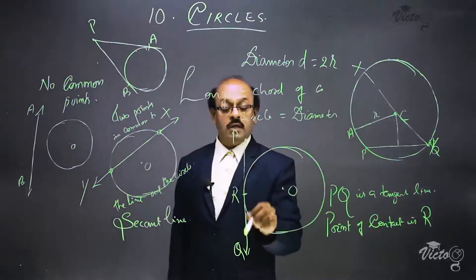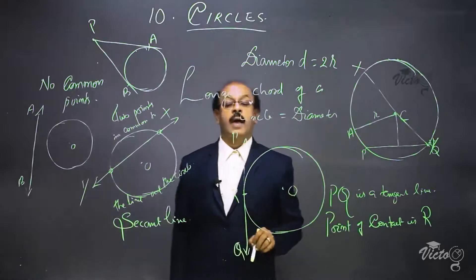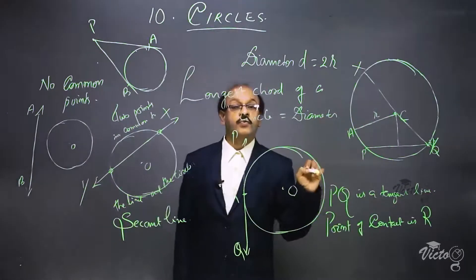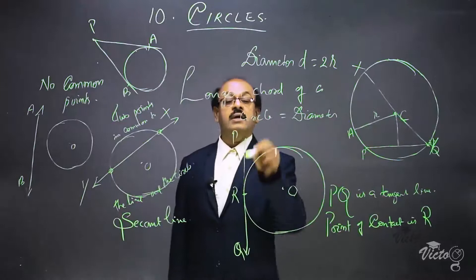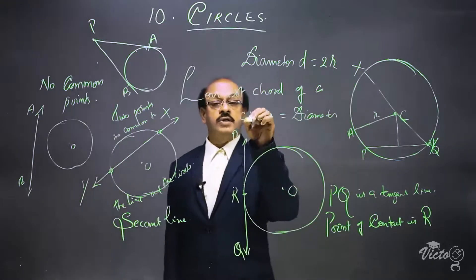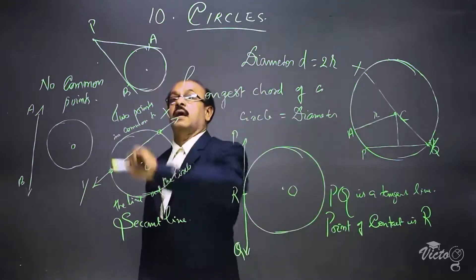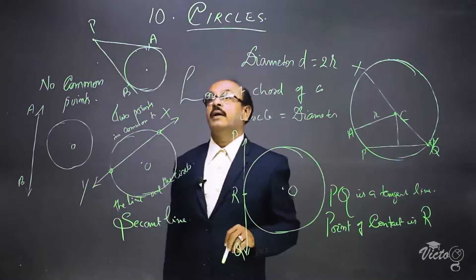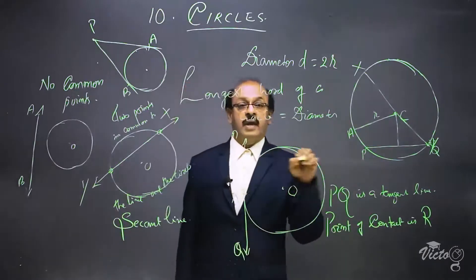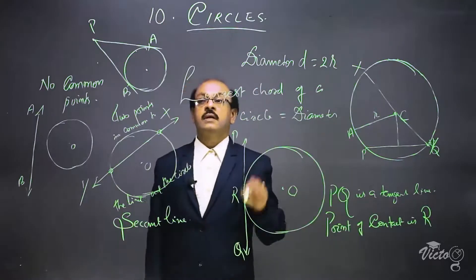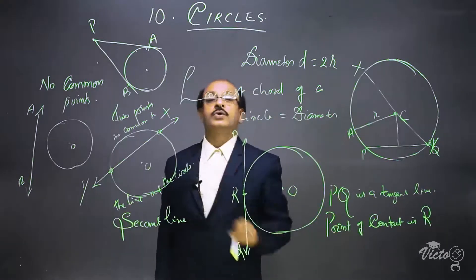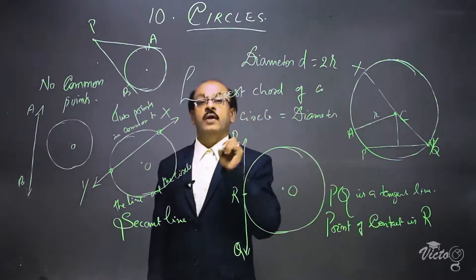PQ is a tangent to the circle with center O and R is the common point, called the point of contact or point of tangency. When P is a point exterior to the circle, PA and PB are the two tangents drawn from the exterior point to the circle. The theorem we have to prove next is: the length of tangents drawn from an external point to a circle are equal — that means length PA equals length PB. Next, we are going to prove this theorem.